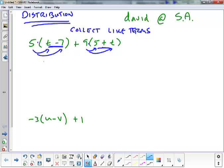So let's see, I got five times t or 5t, five times a negative 7, negative 35, nine times 5, the plus sign carries with the 9. So it's a plus 45 and a plus 9 times a plus t is going to be a positive or a plus 9t.